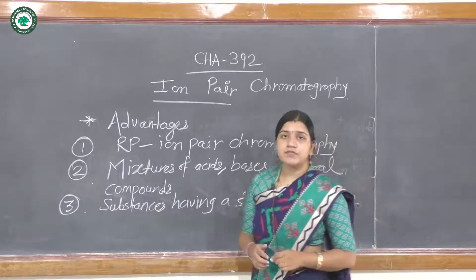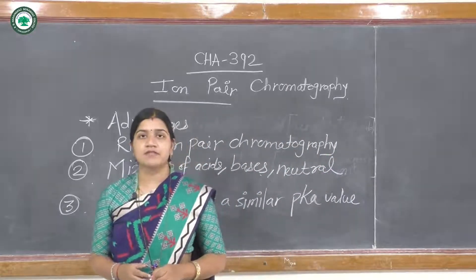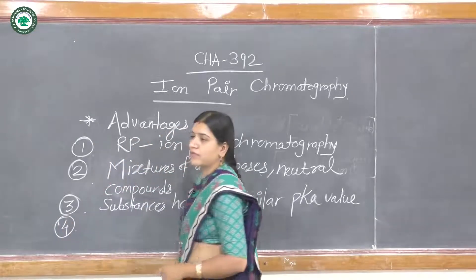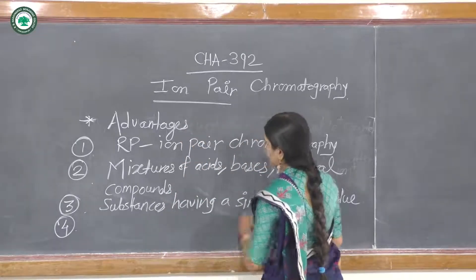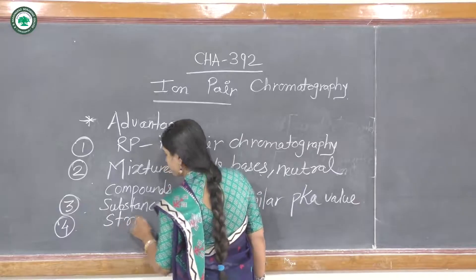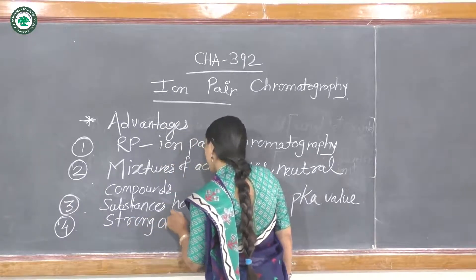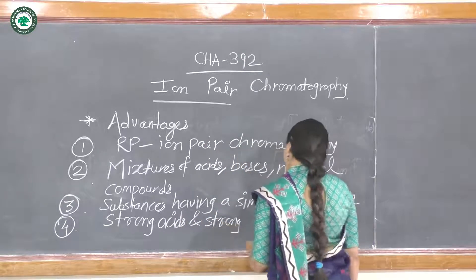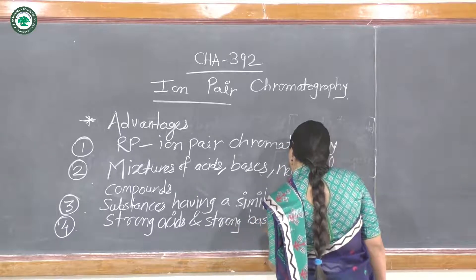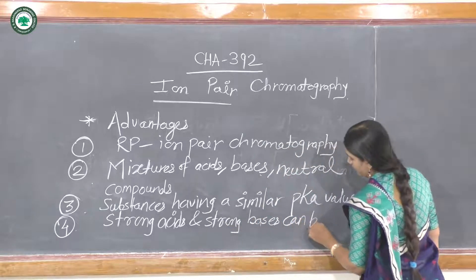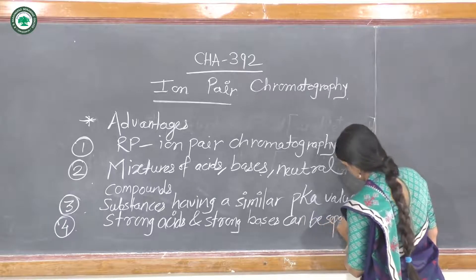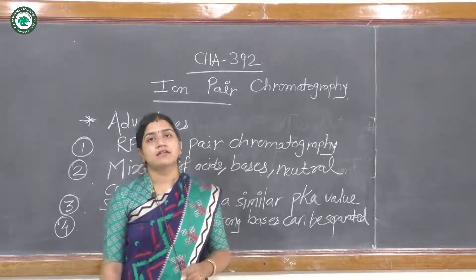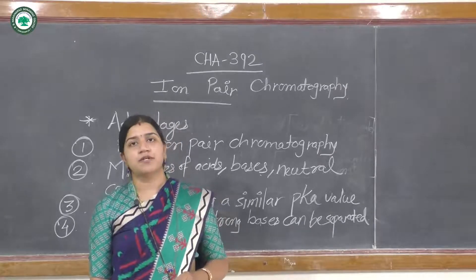Substances such as strong acids and strong bases, which cannot be analyzed by using ion exchange chromatography, can be separated by ion pair chromatography. These are the advantages of using ion pair chromatography.